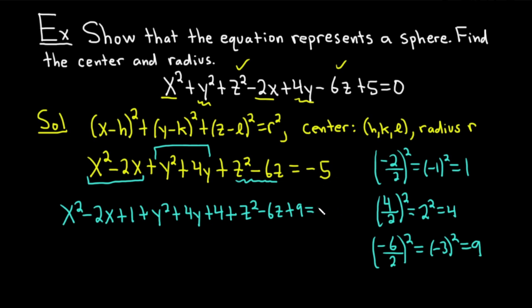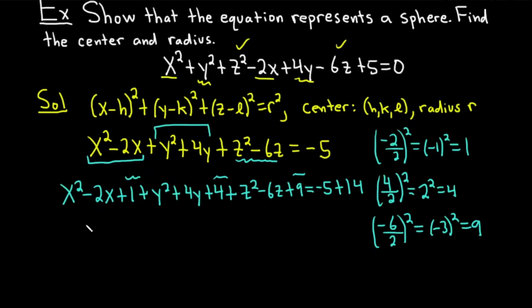A very common mistake is forgetting to balance the equation. Because we added 1, we added 4, and we added 9 to the left side, we need to add those to the right side too. 1 plus 4 is 5, plus 9 is 14. So the right-hand side becomes negative 5 plus 14, which equals 9.